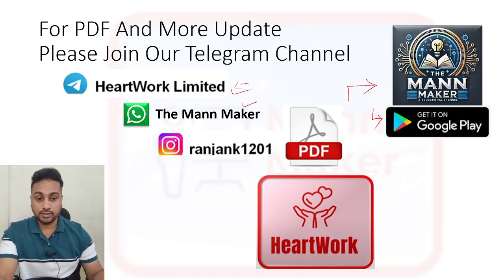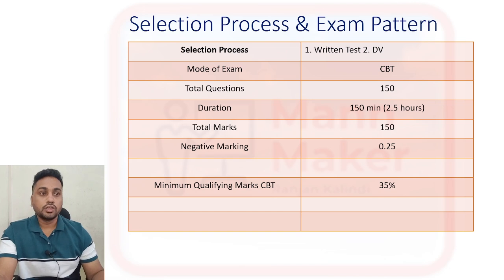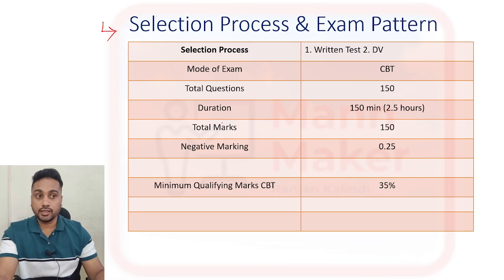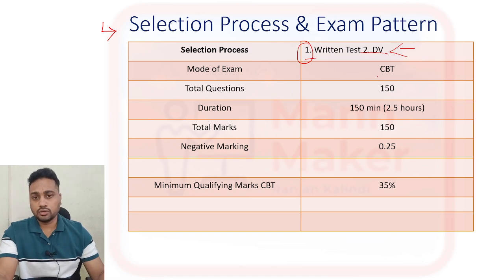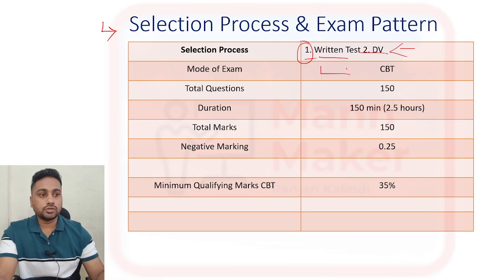First, let's talk about the selection process for this EAT or Technician C exam. There are two steps: first you have to clear your written test, and after that you will get a document verification round, and then you will get your job.